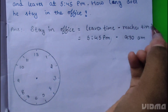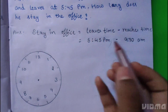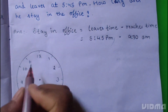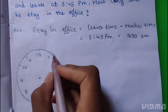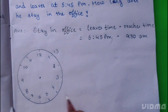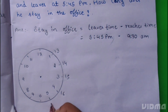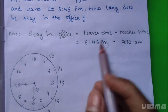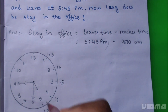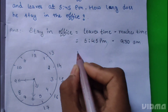Reaches time is 9:30 AM. He leaves at 5:45 PM. When the afternoon passes, the time will change like 13, 14, 15, 16, 17. So he leaves time is 5:45 PM — in the 5's place there is 17 when the evening comes. So we have to subtract.